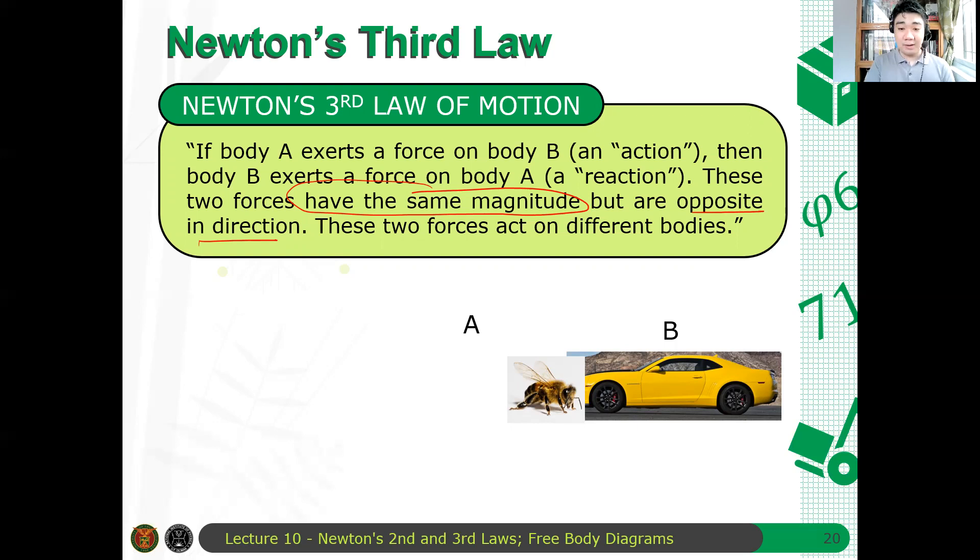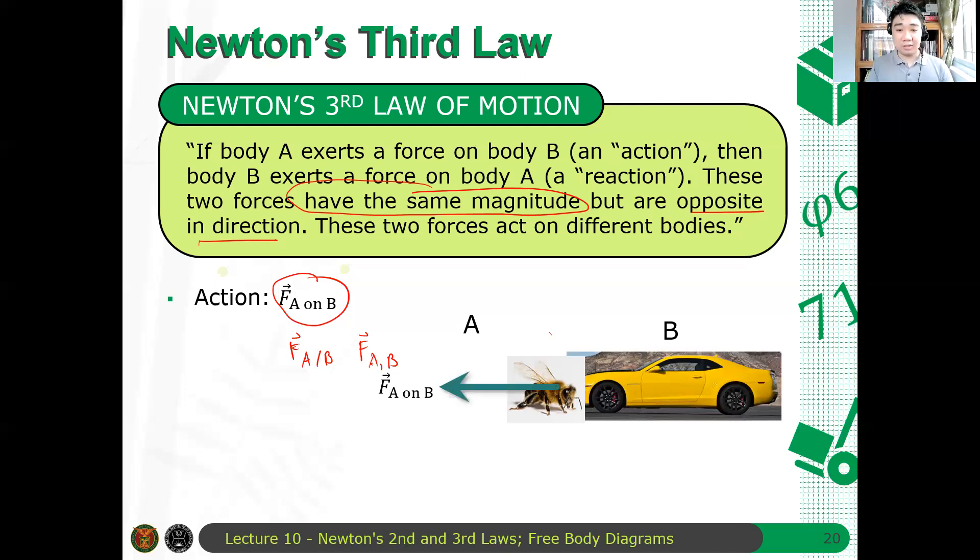So the bee will exert a force on the bumblebee. Let's say if A is the bee, B is the bumblebee, then the force exerted by the bee on the bumblebee can be written as F_A on B. Sometimes some books will write this as F_A dash B, or some books will also write this as F_A comma B. Check the notation in the book you're using. I will be using this notation, F_A on B, para mas malinaw kung ano yung object na nag-act at saka yung object na in-act ng force.